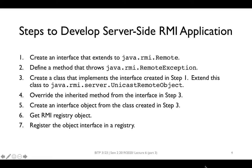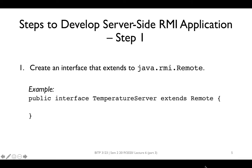Now let's have a look at the steps to develop the server side of an RMI application. There are seven steps for the server side. In the first step, we need to create a Java interface. This interface needs to extend the Remote interface from the java.rmi package. Here we have an example of an interface named TemperatureServer that extends Remote.